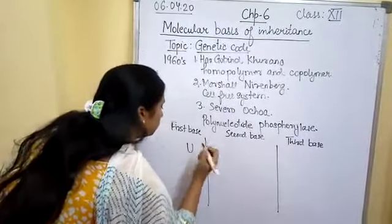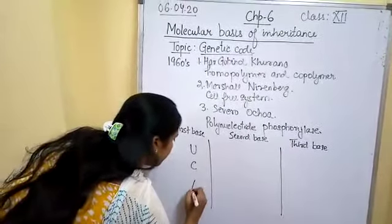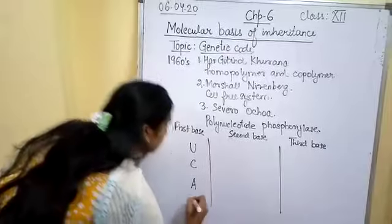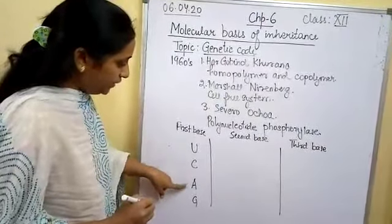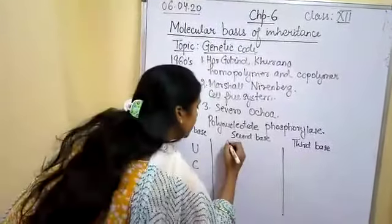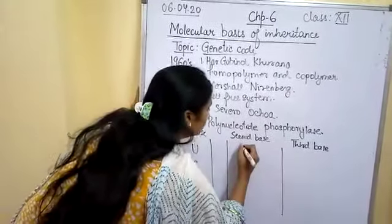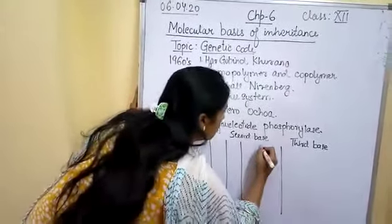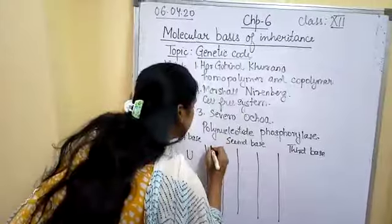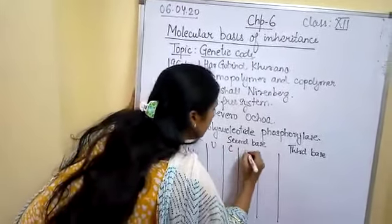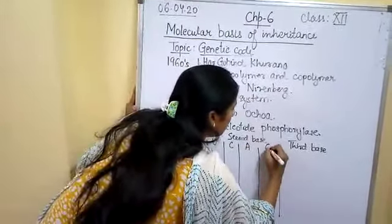U, C, A, G - uracil, cytosine, adenine and guanine. Same way, the second base pair will be also having U, C, A, G. In the same manner: U, C, A, G.